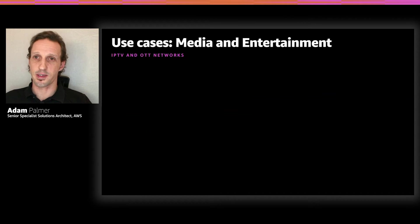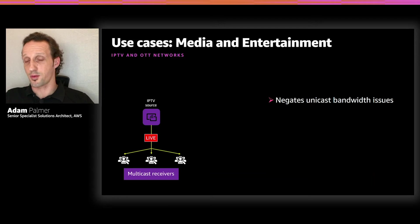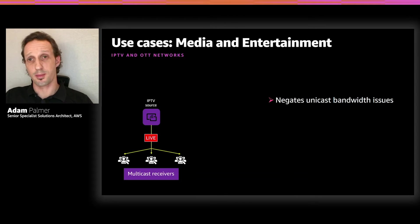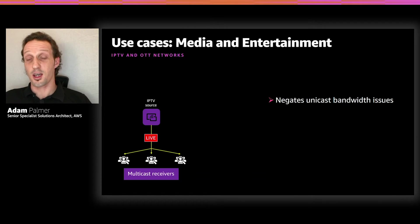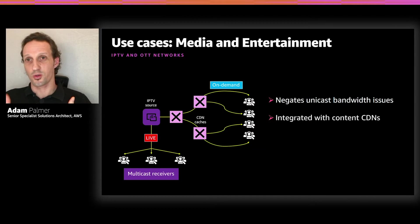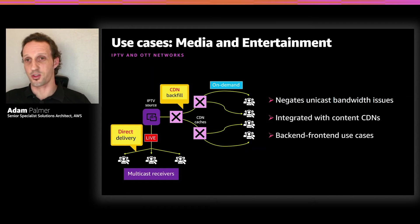Another example is the media and entertainment space. An IPTV provider, if they have their own network communications between themselves and their multicast receivers, can use multicast to deliver live broadcasts — perhaps sporting events or live events. The IPTV provider is able to send high-bandwidth information just once, recouping significant bandwidth on the lines sent to multicast receivers. A more traditional approach might use over-the-top or on-demand CDN caches. Even in that case, multicast has a front-of-house and back-of-house use case — it can efficiently replenish CDN caches from the IPTV source.